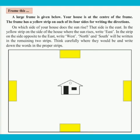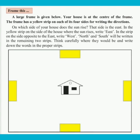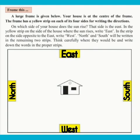Now, let's frame this. A large frame is given below. Your house is at the center of the frame. The frame has a yellow strip on each of its four sides for writing the directions. On which side of your house does the sun rise? That side is the east. In the yellow strip on the side of the house where the sun rises, write east. In the strip on the side opposite to the east, write west. North and south will be written in the remaining two strips. Think carefully where they would be and write down the words in the proper strips.